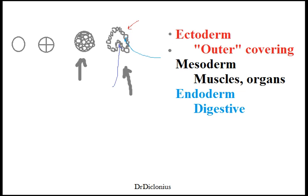These three terms you've probably seen many times. The ectoderm actually derives into a lot of different things, like the eyes. The most general way to remember it is 'outer cover' — ecto meaning outer, so anything on the outside like the eyes. Mesoderm — think muscles, which are kind of in the middle, and organs. And the endoderm — we typically think of the digestive system.